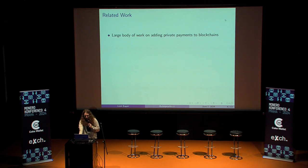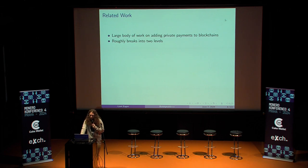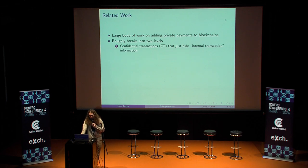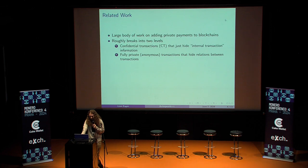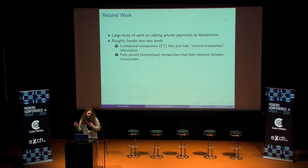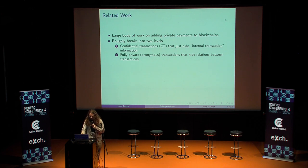There's lots of work on this, starting with the zero-coin paper, obviously Monero, Zcash, TornadoCash, Aztec, lots of projects. This breaks into two discrete levels of privacy. The first is what I call — what people generally call — confidential transactions, which hide internal information to the transaction, like amounts and maybe asset types or scripts. The second level is anonymous transactions or fully private transactions, which hide not only the information internal to the transaction, but the information between transactions — so the transaction graph. This is what you'd use ring signatures for, or a Zcash-style accumulate-nullify type thing, full chain membership proofs.